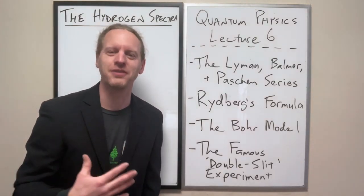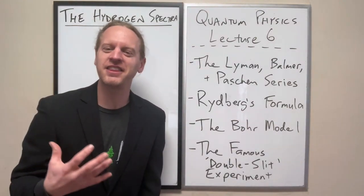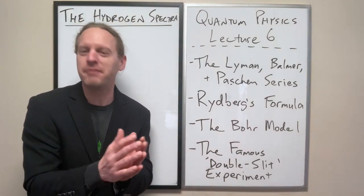De Broglie was a PhD student at the time of the quantum revolution. His PhD thesis was actually the link that put everything together.